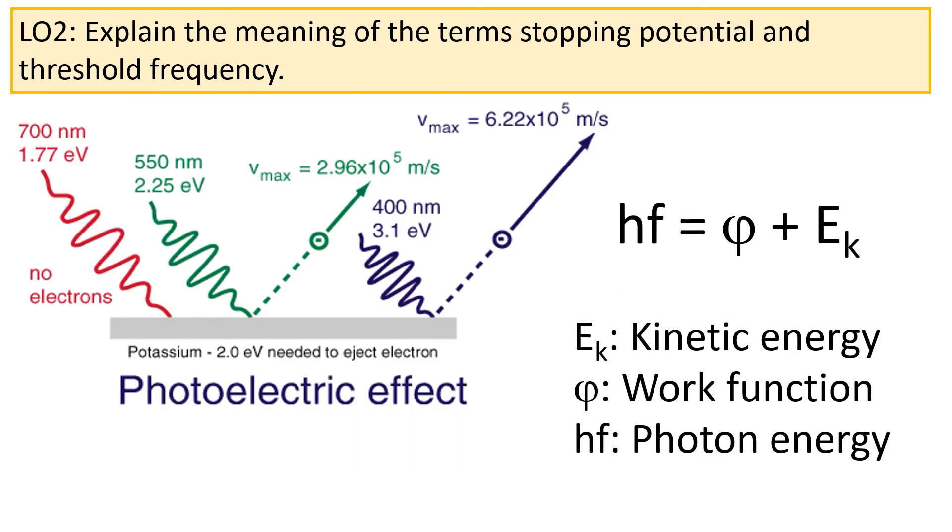There's a second important observation we should make about the photoelectric effect. As we increase the frequency of the light, that is, as we increase the photon energy, the energy of the ejected electrons also increases. The reason for this is because a certain amount of energy, φ, is needed to release an electron from the surface. However, any excess energy of the photons is converted into the kinetic energy of the electrons.